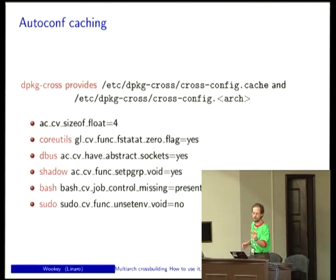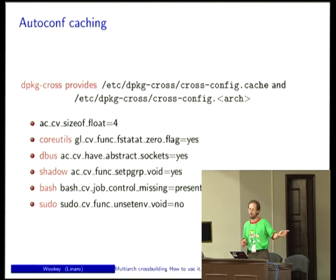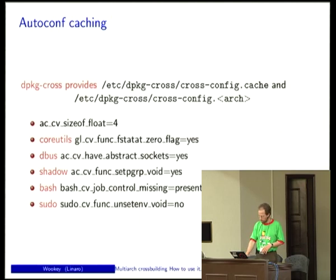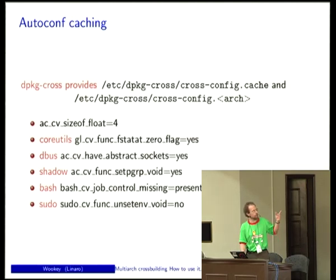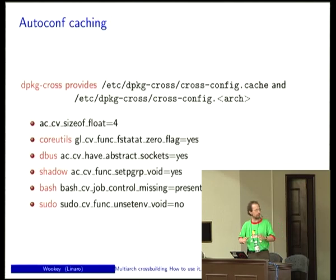The goal is for these new toolchains to end up in the standard archive during wheezy+1. We've managed to sneak a little bit into dpkg such that cross-architecture dependencies will work in wheezy, so you'll be able to use these cross-compilers before they're official. The autoconf caching mechanism works as follows: dpkg-cross provides cross-config.cache for generic stuff and cross-config.arch for architecture-specific things.